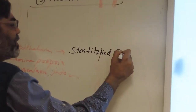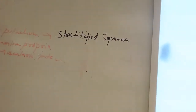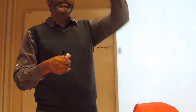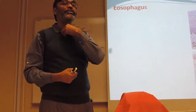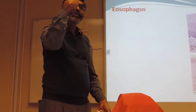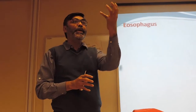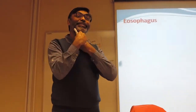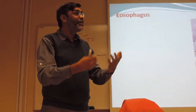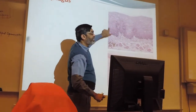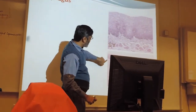Why stratified squamous? The function of the esophagus is not digestion but transport. When food passes through the esophagus it puts a lot of pressure — sometimes you eat a whole burger in one bite. So the mucosa needs to withstand this pressure. The epithelium becomes thick — stratified squamous — to sustain this pressure. You can see the thick epithelium with squamous cells at the surface.